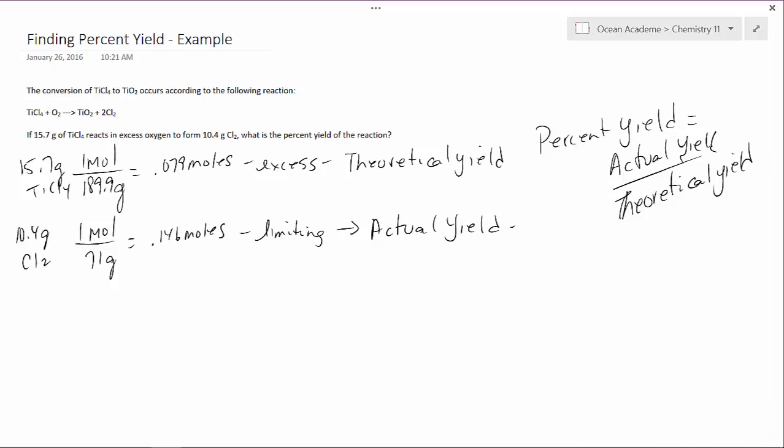So let's look first to our actual yield. We'll use our 0.146 moles of Cl2. And we need to convert that. So we need to apply our ratio. We've got our moles of Cl2, we need to convert that to moles of TiO2. Looking to our equation we see our moles of Cl2 are 2 and our moles of TiO2 is 1. Now this gets us to moles of TiO2, but with yield we need grams.